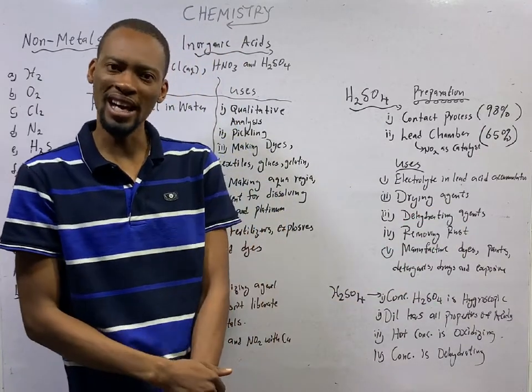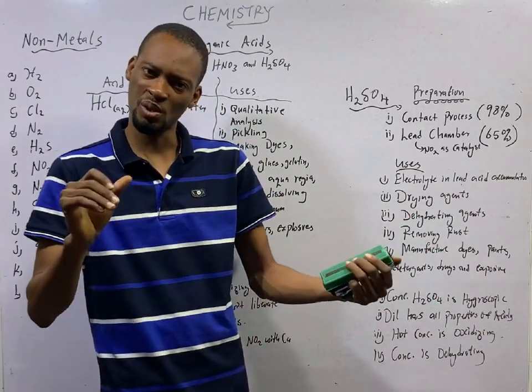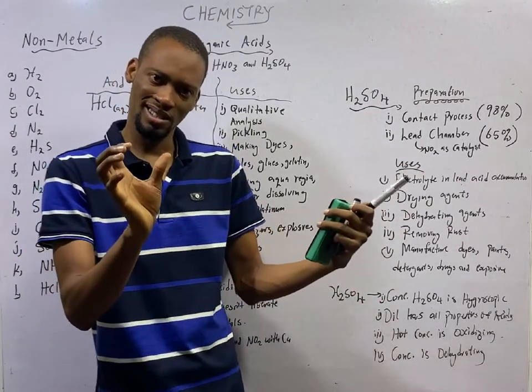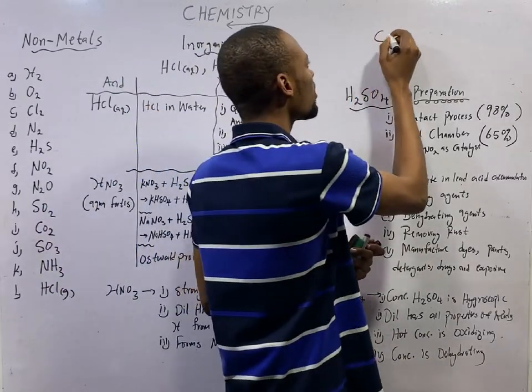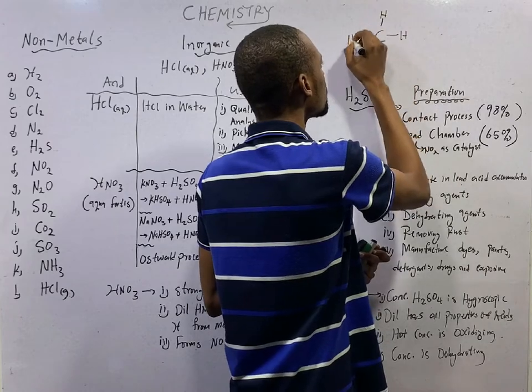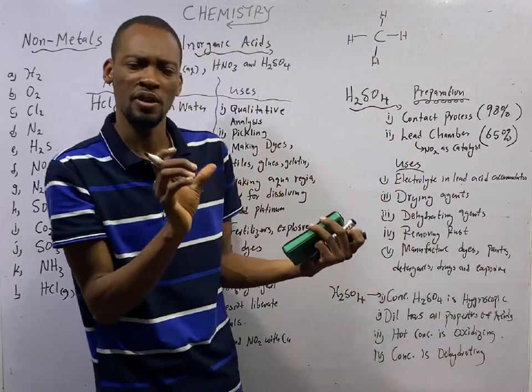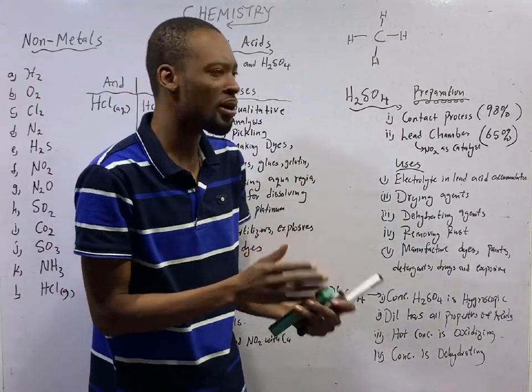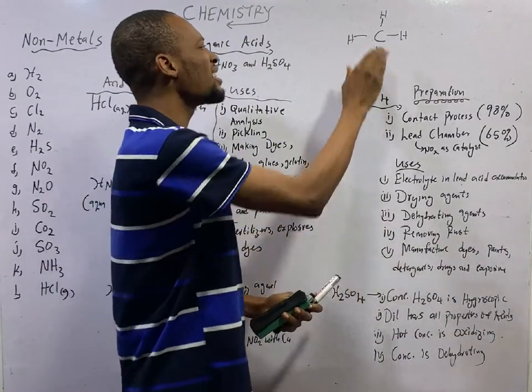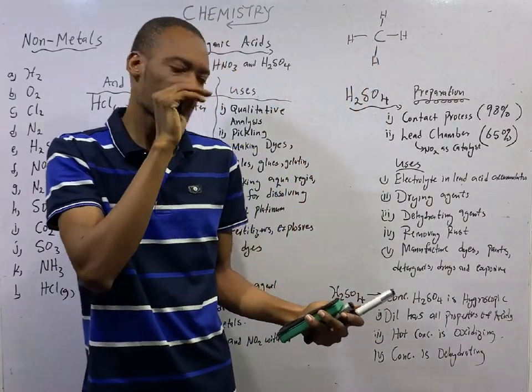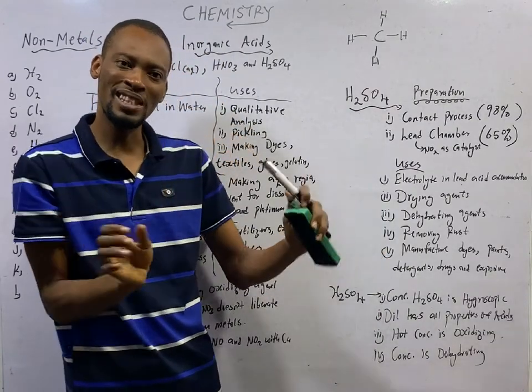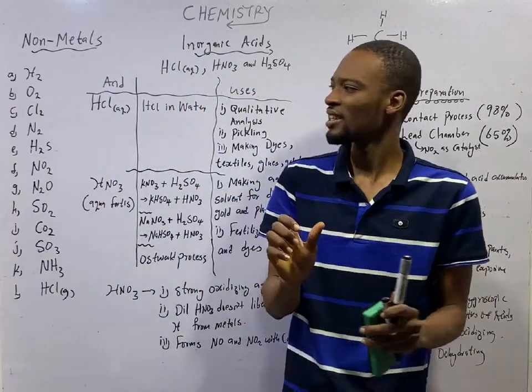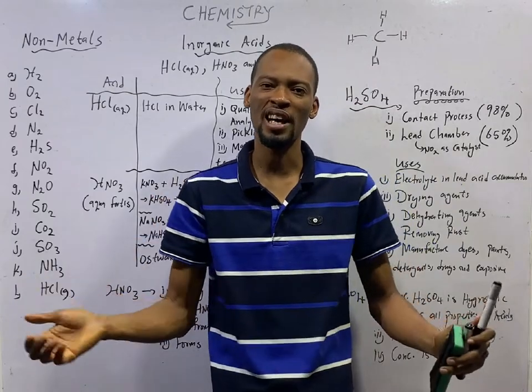When you hear organic, it means from natural source. But in chemistry, organic means the compounds that possess the carbon-hydrogen bond. This is the general explanation of organic compounds. Therefore, inorganic compounds are simply compounds that don't possess this carbon-hydrogen bond. This is just a tip. By the time we start organic chemistry, you will have a full definition and everything about organic compounds.